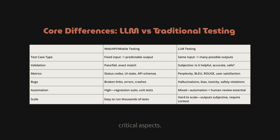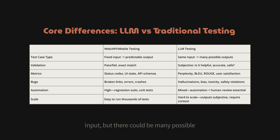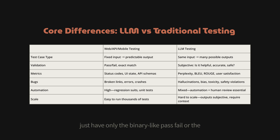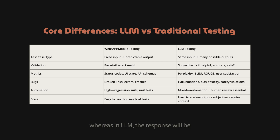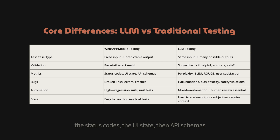Here is a table comparing critical aspects. For test case type: traditional testing has fixed input and a predictable output, whereas LLM testing has an input but many possible outputs. From a validation standpoint, traditional testing is binary — pass or fail or exact match — but in LLM testing the response is subjective: is it helpful, accurate, and safe? There are different parameters to evaluate.